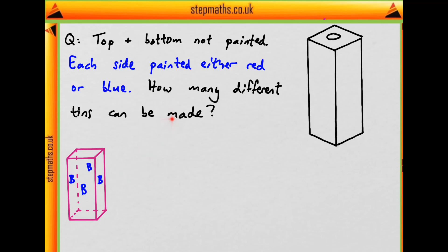Where would it make sense to go next? We could change one of these sides to red like so. Are there any other ways of having three blues and one red? If you swap these two around it will still be the same tin because the tin can spin around, as all these four sides are identical. So this is the only way of having three blues and one red.